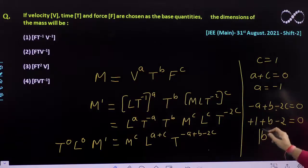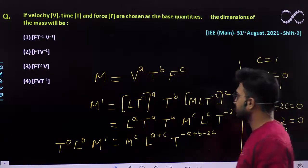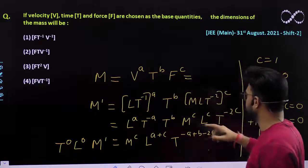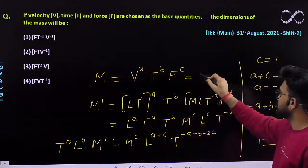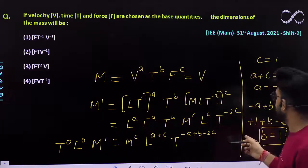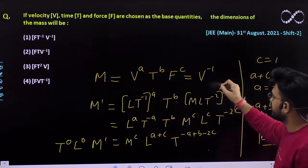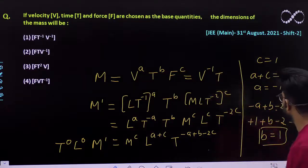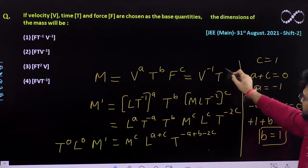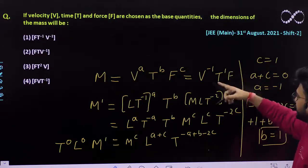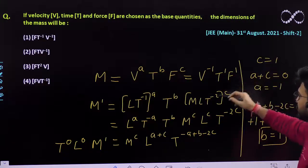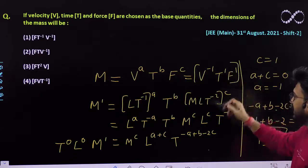So that means this term must be equivalent to v raised to power a which is -1, t raised to power b which is 1, and f raised to power c which is 1. So this would be our correct answer.